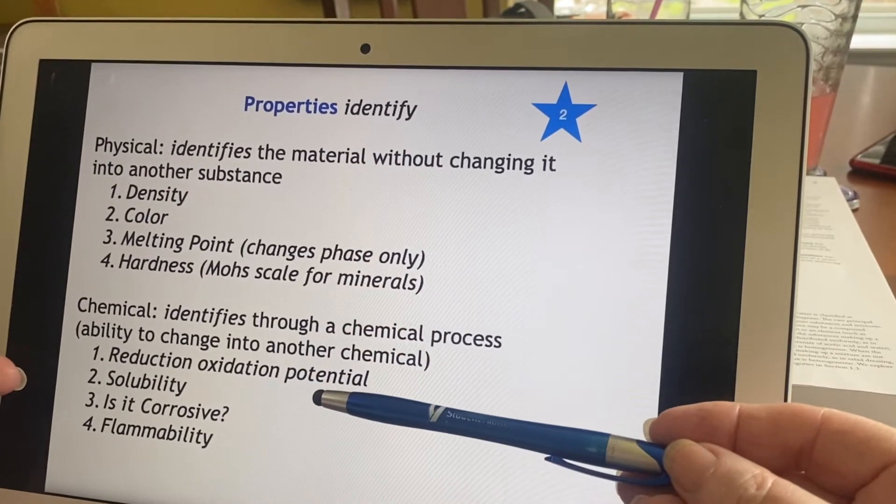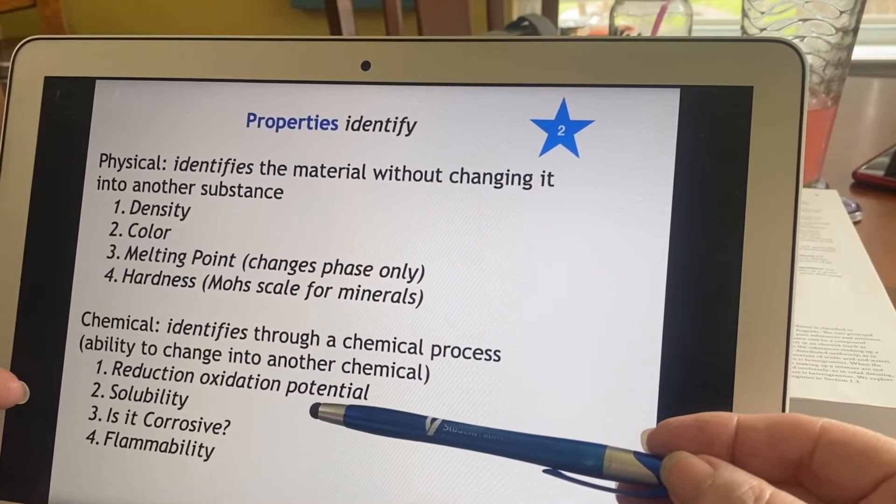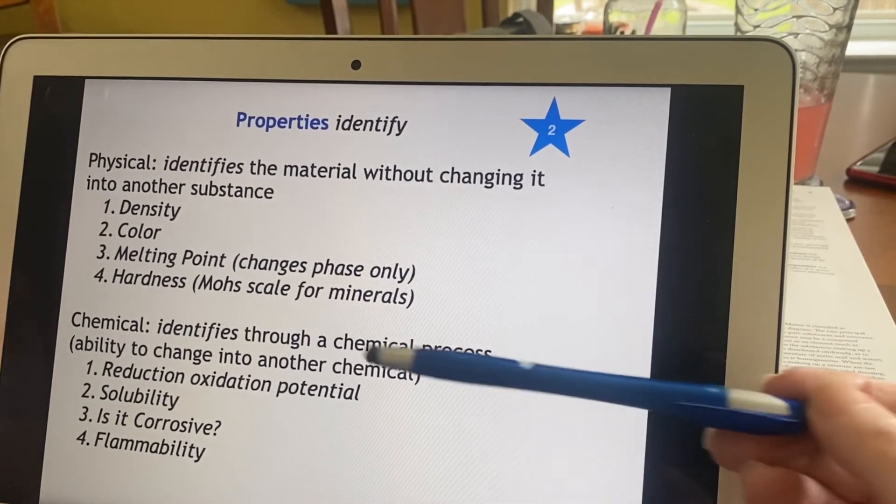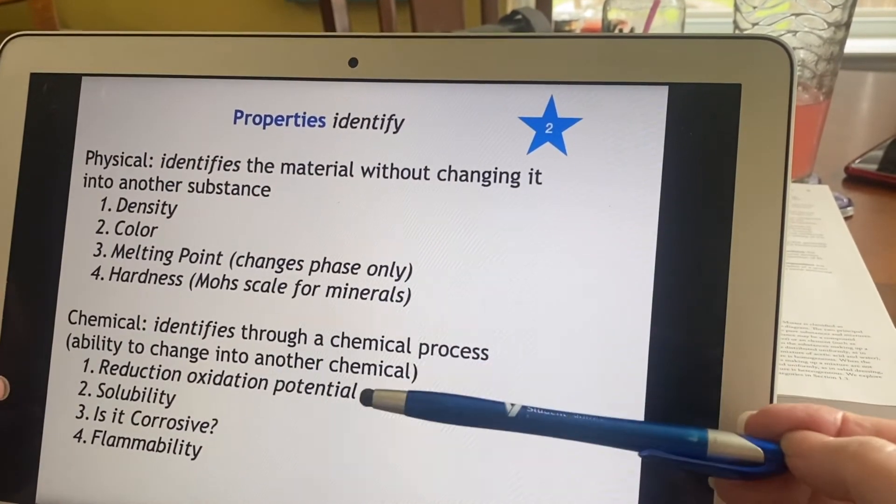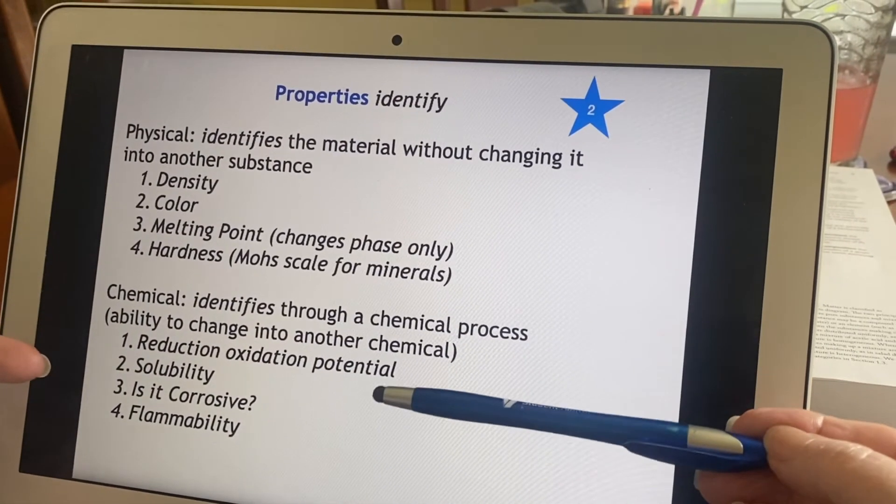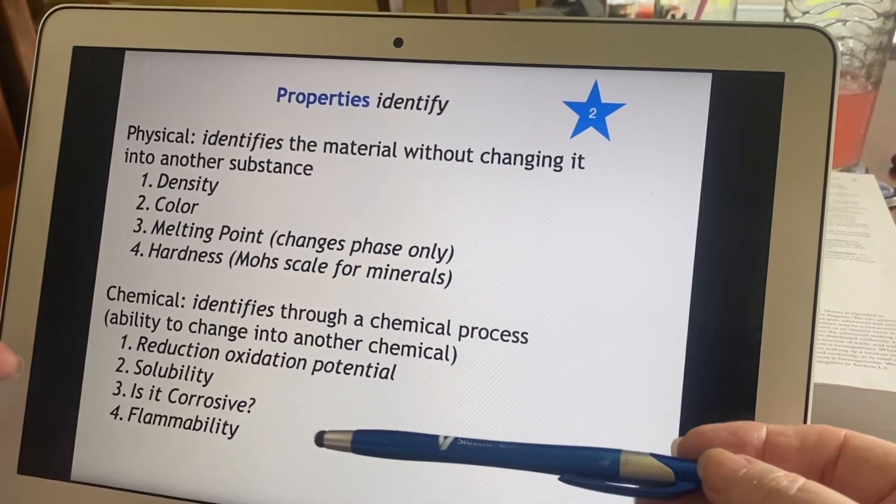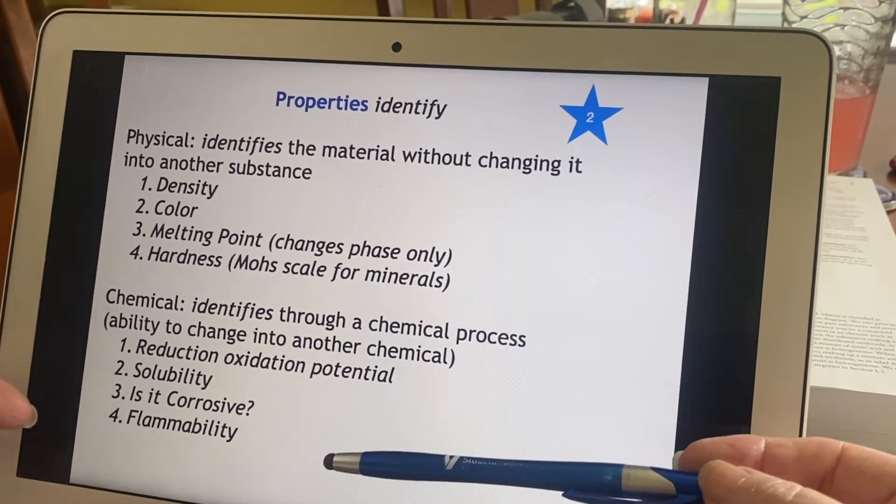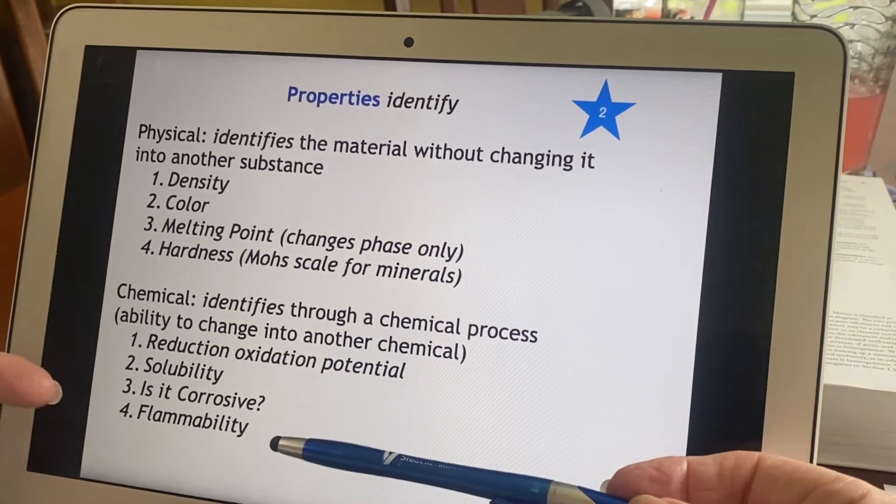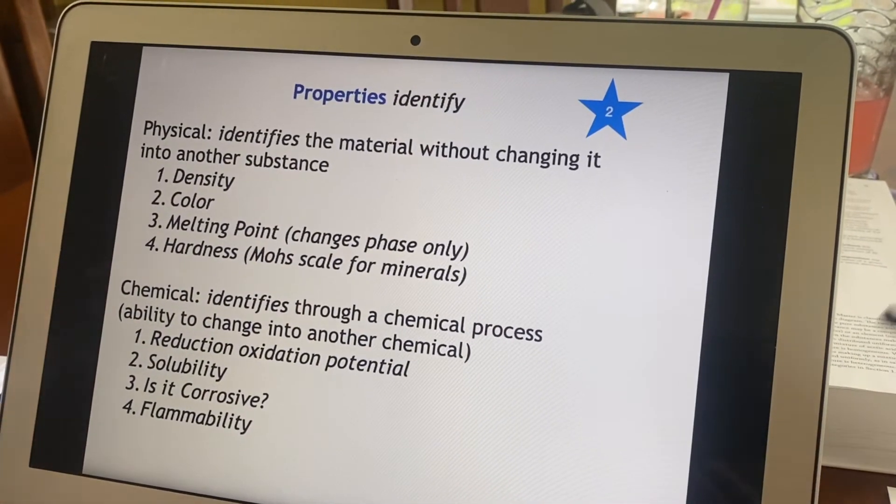Solubility. Oh, solubility. What's that doing in here? Because it sure seems like a lot of times you can dissolve something and then you can just dry it back out again and get it back. But you know what? Not always. Sometimes it actually just plain reacts with the water. So solubility ends up being here in the chemical portion. Is it corrosive? Well, if it's corrosive, it is physically reacting with something else. An acid corrodes something by reacting with it, whether it will burn or not. So these are things that help you identify what something is.